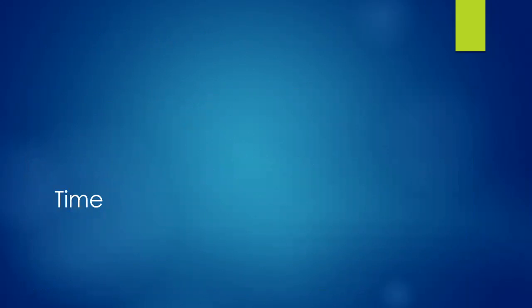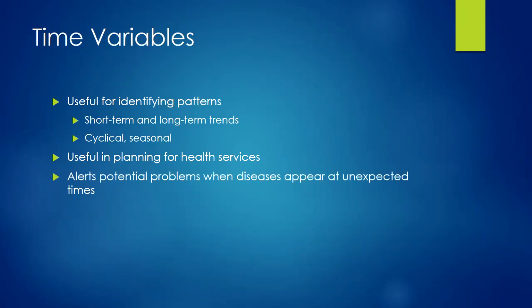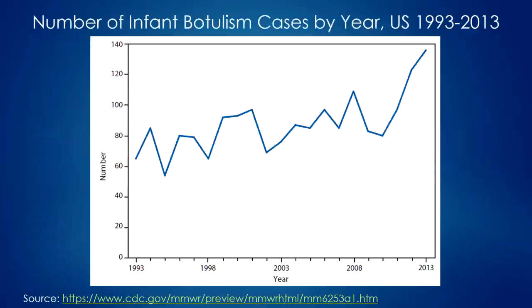The last dimension of descriptive epidemiology is time, which is helpful for identifying patterns — both short and long term — and looking at cyclical or seasonal trends in disease. This is useful in planning health services, since there may be particular times of year requiring increased specific services, and it can alert us to problems when diseases occur at unexpected times.